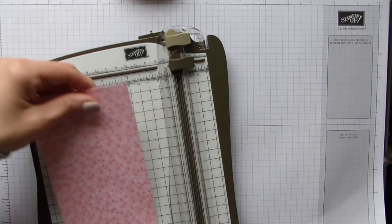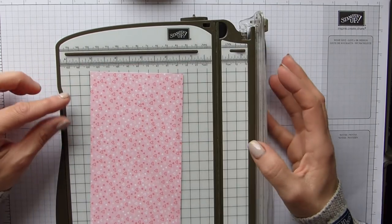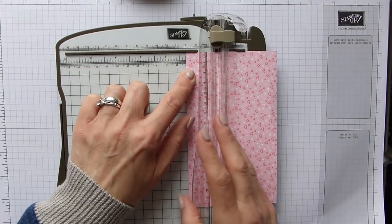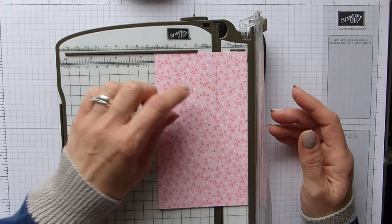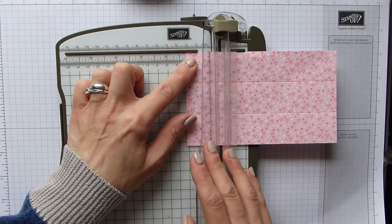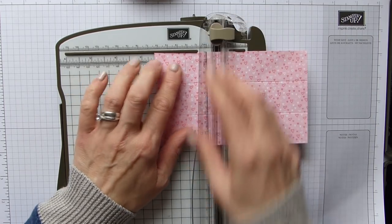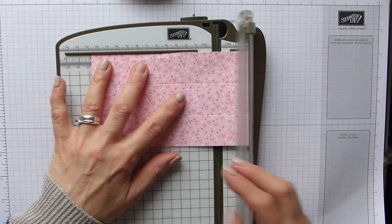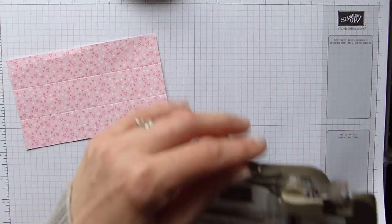We are then going to score it. So on the short side, we're going to score at one and a quarter inches and two and a half, and then in centimeters that will be three and six centimeters. And then on the long side, we're going to score at one and a quarter, two and a half, three and three quarters, and then five. In centimeters that will be three, six, nine, and twelve. Simple as that.